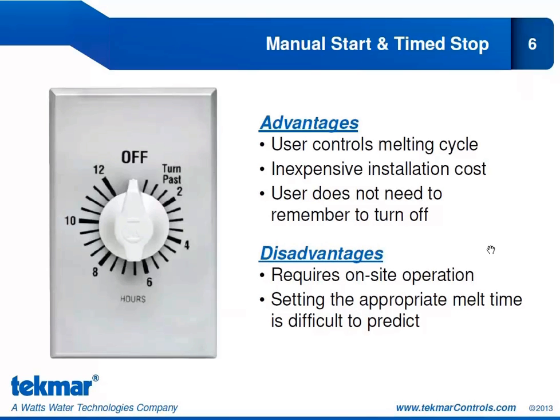The manual start and timed stop is one step better. You're still controlling the melting cycle, and it is still an inexpensive installation. However, the benefit is you don't have to remember to turn it off — it's on a timer. You never run into situations where you turn your snowmelt system on and then forget entirely about it until you get your energy bill. The maximum you can typically set it to is 12 hours, and it will automatically turn off after the time has expired.